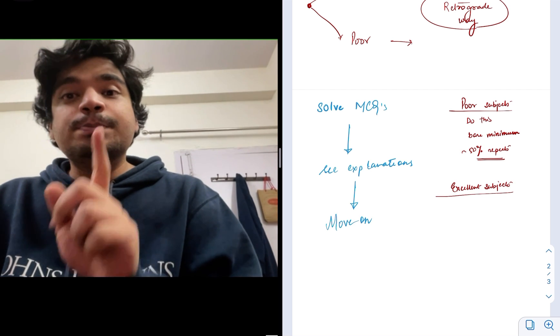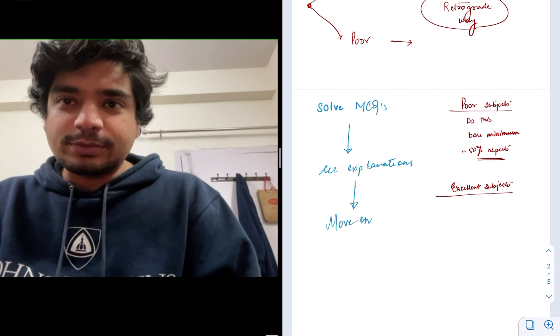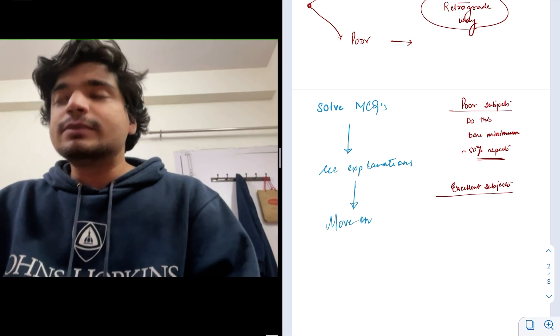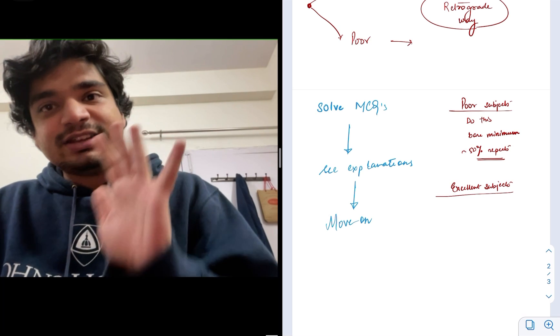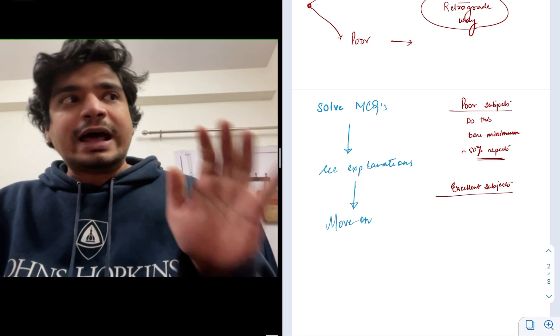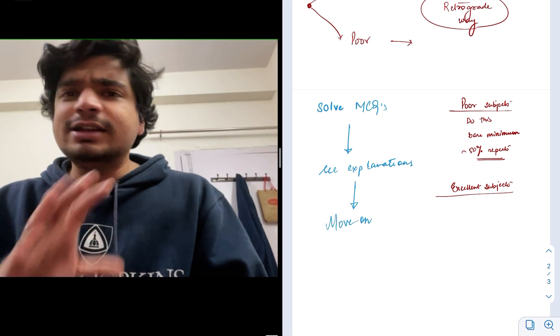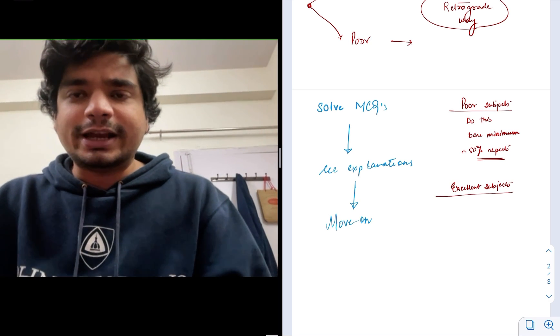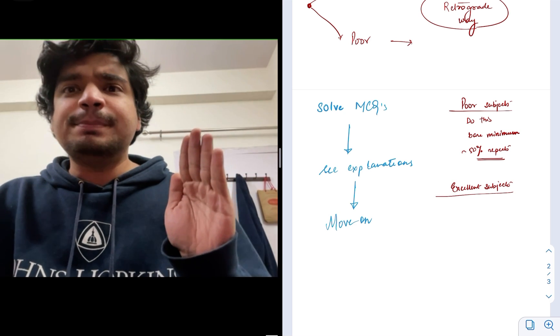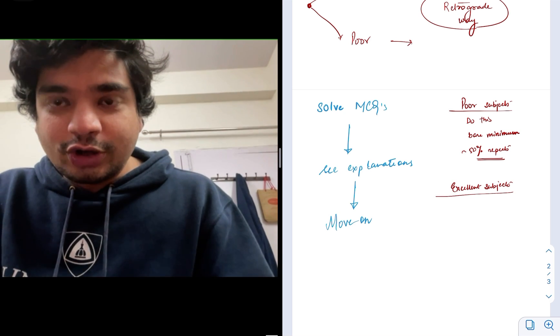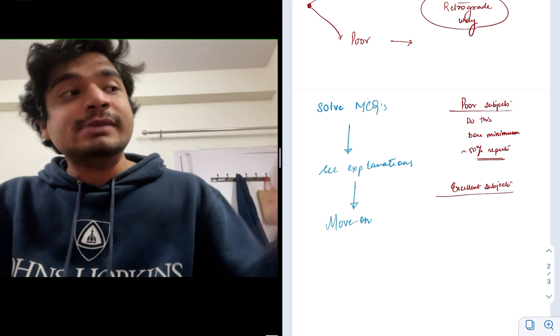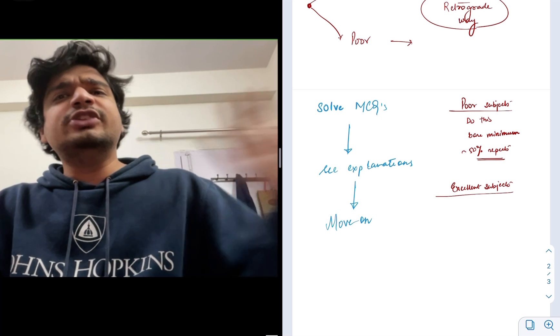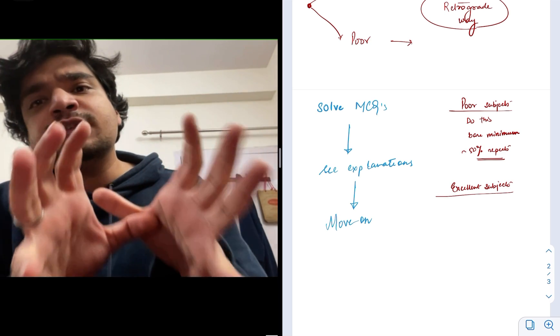The second thing it is valid for is the poor subjects. The reason it's valid for poor subjects is, taking a specific example from my NEET-UG examination, if you just do the previous five years MCQs, what will happen is the chances of repeats are high. At least 30 to 50% of the paper in any examination is repeated in either a direct way or an indirect way. Reading the explanation of those MCQs will make you realize, oh, this is my weak part.